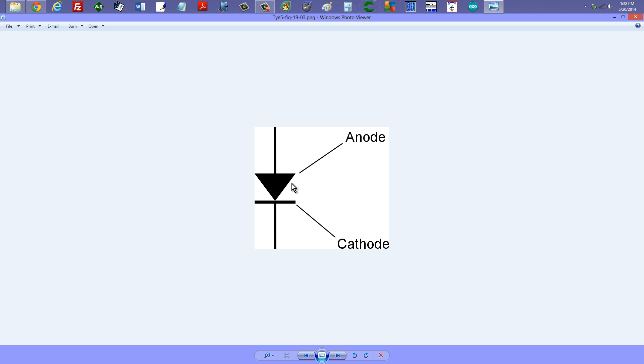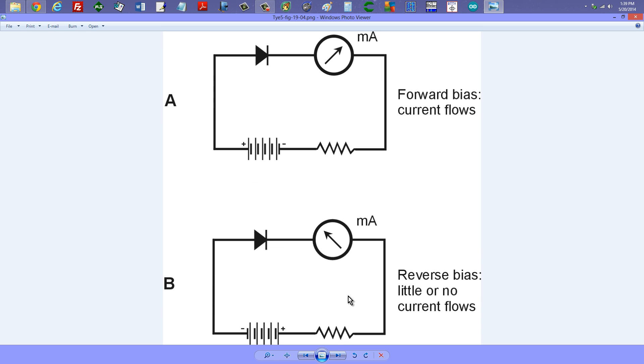So we call the anode a p-type semiconductor for positive, and the cathode an n-type semiconductor for negative. As things work out, electrons can move easily in a diode from the cathode to the anode. That would be from the lower part of this diagram to the upper part, but not very easily at all, or if at all, from the anode to the cathode. There are certain exceptions, but that is a topic for a little bit more sophisticated video than this.